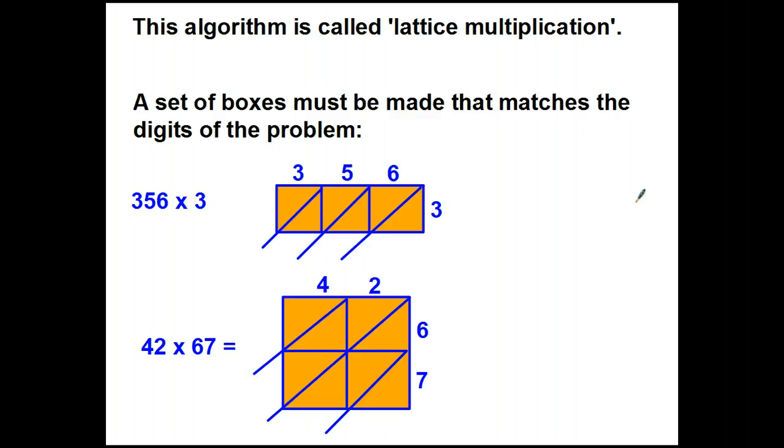So here's a second. This algorithm is called lattice multiplication. It's a set of boxes that have to be made that match the digits of the problem. For example, if I wanted to multiply 356, a three-digit number, times 3, a single-digit number, I would need to have a lattice that is three squares wide and one square deep. If I wanted to do 42, a two-digit number, times 67, another two-digit number, I would need a two-by-two set of boxes or a total of four.